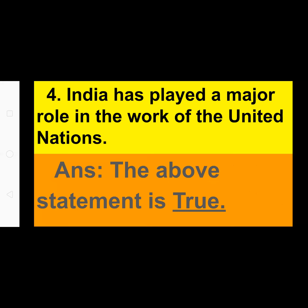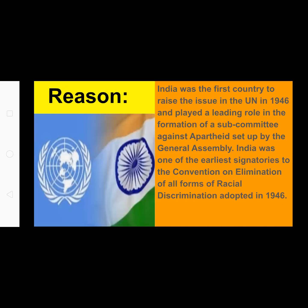Next: India has played a major role in the work of the United Nations. This statement is TRUE. Reason: India was the first country to raise a racial issue in the United Nations in 1946 and played a leading role in the formation of a subcommittee against apartheid set up by the General Assembly. India was one of the earliest signatories to the Convention on the Elimination of All Forms of Racial Discrimination adopted in 1946.